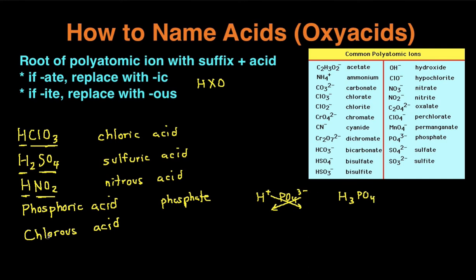All right, last example, chlorous acid. So let's see, it ends in OUS, meaning it originally was ITE. So it originally was chlorite. So let's see what chlorite is. It's ClO2-, and then because it's an acid, we know there's going to be an H component in front.